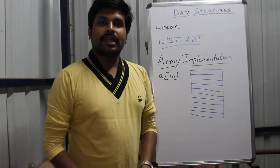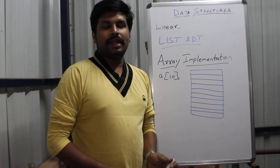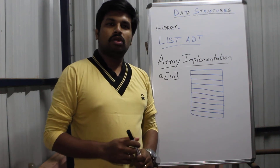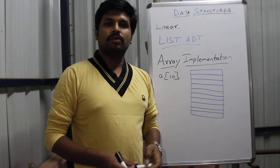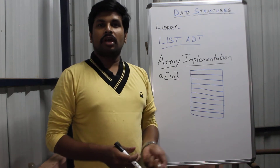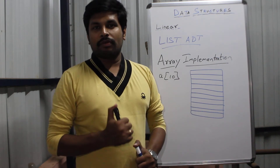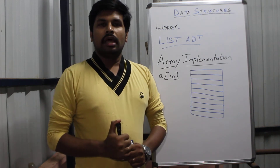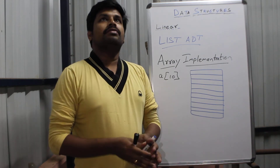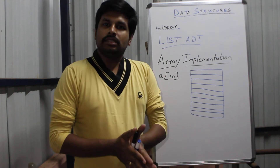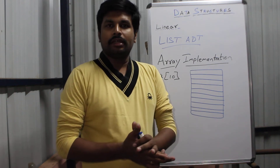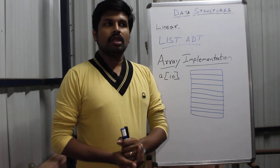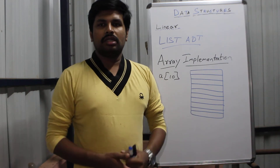Hi guys, welcome to the second tutorial of data structures. In the last tutorial we have seen what is a data structure, what are the types of data structures, what is abstract data type, and what are the various types of abstract data types we are going to implement. We have seen List ADT, Stack ADT, and Queue ADT, and what are the implementations possible for all three.